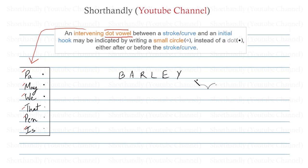Let's try to understand this statement word by word. 'An intervening dot vowel' — so here goes our first word, 'intervening.' Intervene means to come in between, or to occur between points of time or events. So 'an intervening dot vowel between a stroke or a curve and an initial hook' — we're talking about these dot vowels.